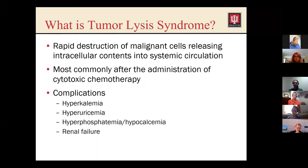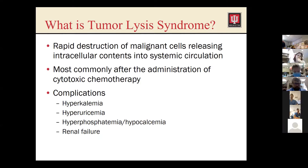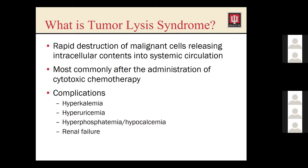Starting with tumor lysis syndrome — what actually is it? In cancer patients, we have rapid destruction of malignant cells once we start chemotherapy, and that releases all the intracellular contents into the circulation, especially electrolytes. This is most commonly seen after chemotherapy administration, typically within the first two days. In some patients, we can see spontaneous tumor lysis, which is pretty rare except in CLL patients with exceptionally high white blood cell counts. Common complications include hyperkalemia, hyperuricemia, and hyperphosphatemia, which can result in hypocalcemia — and all of that can lead to renal failure.